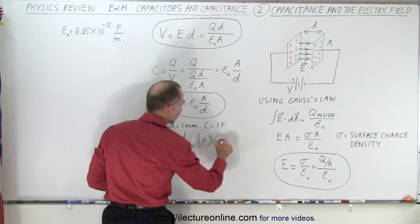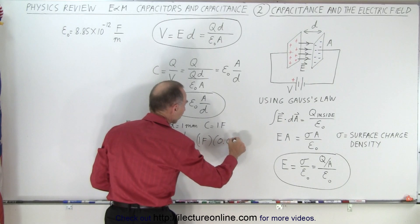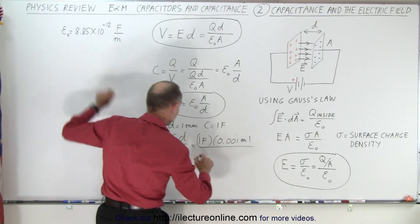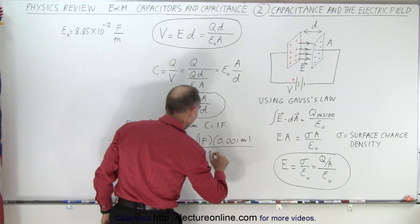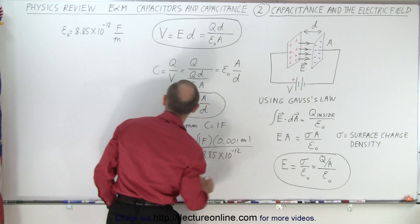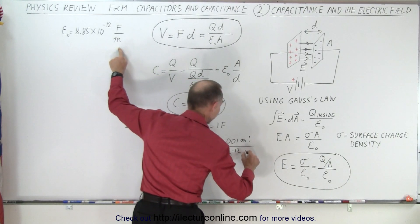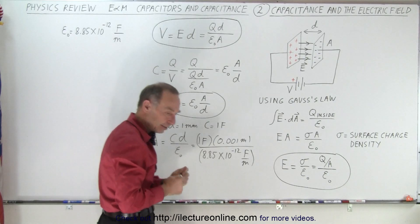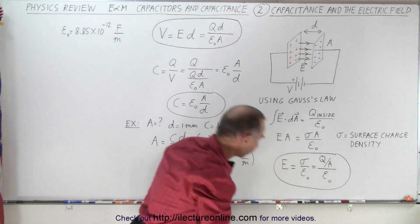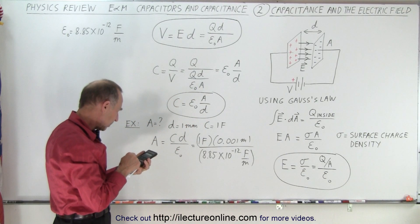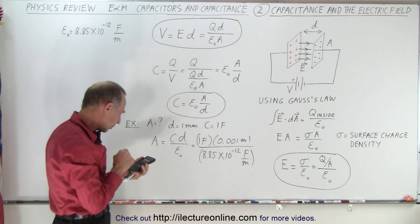Capacitance is going to be one farad. Distance, let's call it one millimeter, which is 0.001 meter. And then we divide it by epsilon nought, which we define up here as 8.85 times 10 to the minus 12, and we can use units of farads per meter. All right, now we need a calculator. So we have 0.001 divided by 8.85 e to the minus 12 equals...